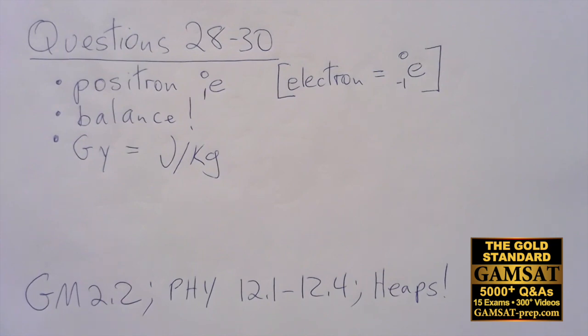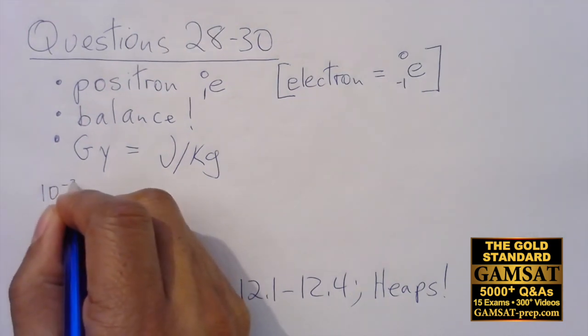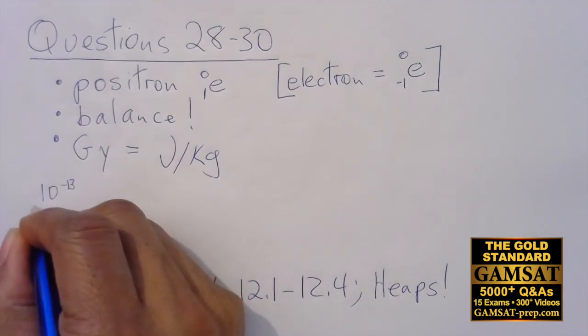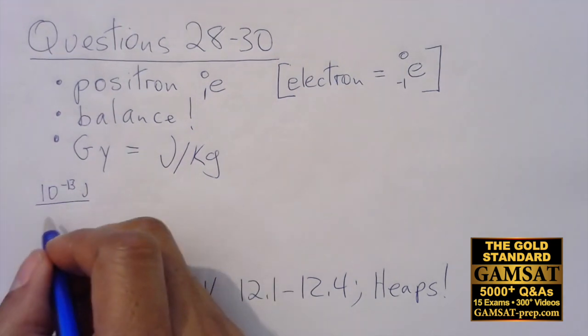Dimensional analysis is just being very careful with your units and then magic can happen as long as you're careful with your units. The average energy from a single annihilation is approximately 10 to the minus 13 joules. Let's transfer that information into math, so we have 10 to the minus 13 joules per annihilation.